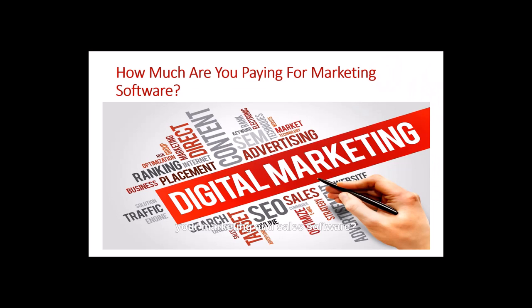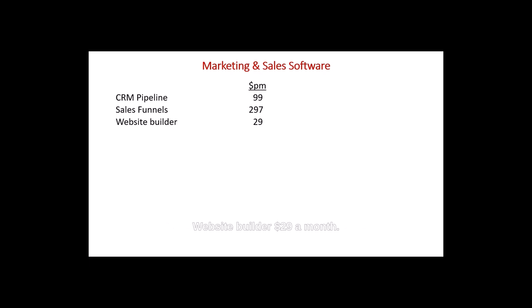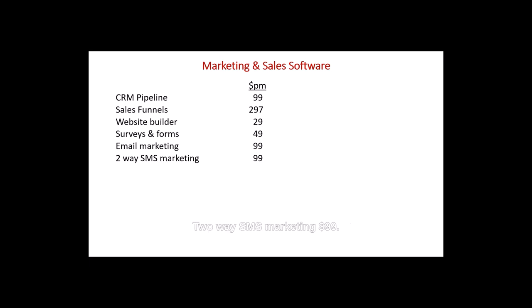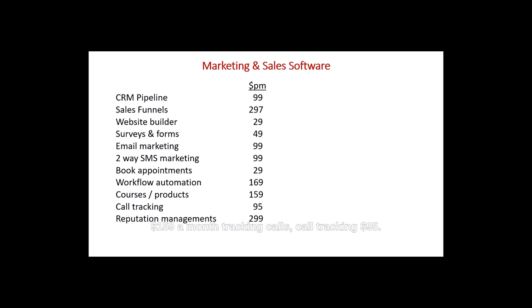How much are you paying for your marketing and sales software? As examples, you could be paying separately for all of these items: CRM and pipeline management $99 a month; sales funnels unlimited $297 per month; website builder $29 a month; surveys and forms $49; email marketing $99 a month; two-way SMS marketing $99; booking appointments $29 a month; workflow automation $169 a month; selling courses and products online $159 a month; call tracking $95; reputation management $299; tracking and analytics $49. All of those can add up to a lot of money.